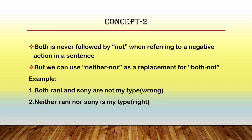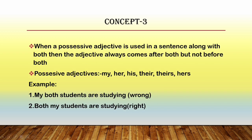Now we shall see the third concept of the second rule. The third concept tells us that whenever a possessive adjective is used in a sentence along with 'both', that possessive adjective should always come after 'both', but not before it. Examples of possessive adjectives include: my, her, his, theirs, hers. Whenever these kinds of possessive adjectives are used along with 'both', they should always come after the word 'both'.